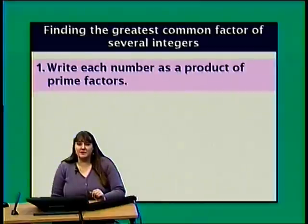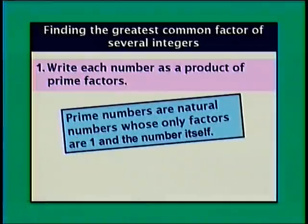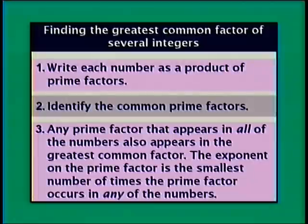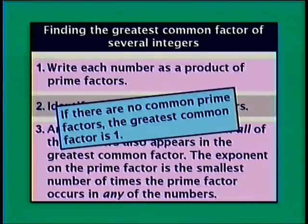Our first step is to write each number as a product of prime factors. Prime numbers are natural numbers whose only factors are 1 and the number itself. The natural numbers are just the positive counting numbers: 1, 2, 3, and so on. Second, we identify the common prime factors — any prime factor that appears in all of the numbers also appears in the GCF, with the exponent being the smallest number of times it occurs in any of the numbers. If there are no common prime factors, the greatest common factor is 1.